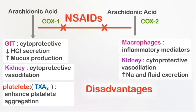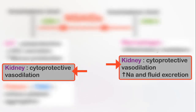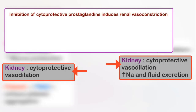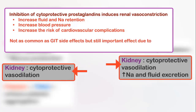The other important side effect of the wide use of non-selective NSAIDs results from suppression of renal cytoprotective prostaglandins produced via both COX-1 and COX-2 pathways. Inhibition of cytoprotective prostaglandins induces renal vasoconstriction, which results in fluid and sodium retention and increases blood pressure, which leads to increases in the risk of cardiovascular complications. The renal and cardiovascular complications of non-selective NSAIDs might not be as common as the GIT complications, but they are real serious challenges due to the large percentage of the population that uses non-steroidal anti-inflammatory drugs.